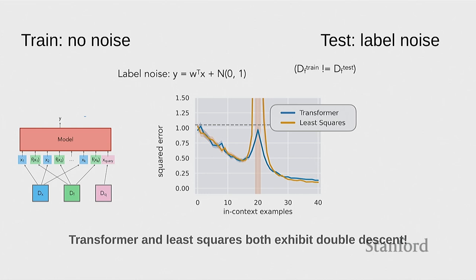Question: is that just because the transformer is a better universal function approximator? I don't think so. I think it is inductive bias. We tried to make the LSTM large so it wasn't a capacity issue. It could be a training issue — LSTMs are hard to train — so not quite sure.